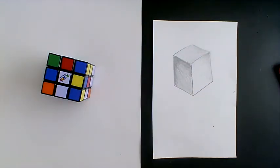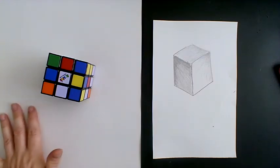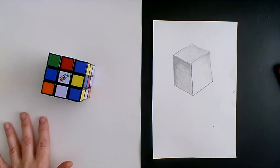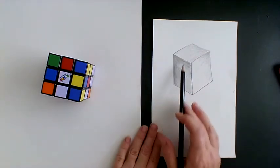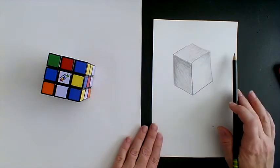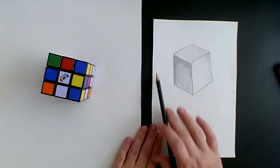Now you have your shading for your cube finished and we want to add the shadow that is cast onto the surface. It's going to be on the same side as your darkest side. So if my light source is on my right, my shadow is on the left.